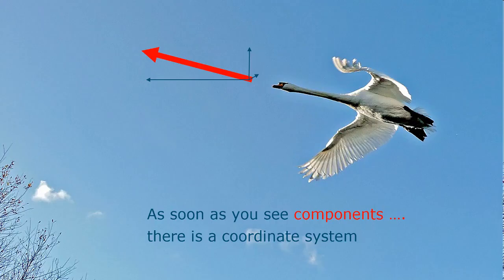So, to return to our swan. As soon as you see components in relation to a vector, you know that there is a coordinate system involved somewhere. Either explicitly or implicitly.